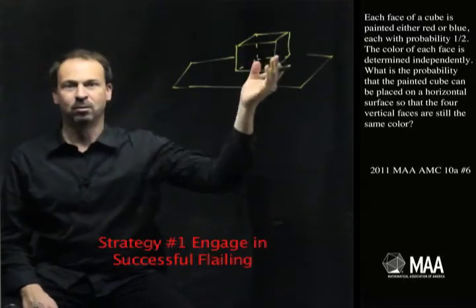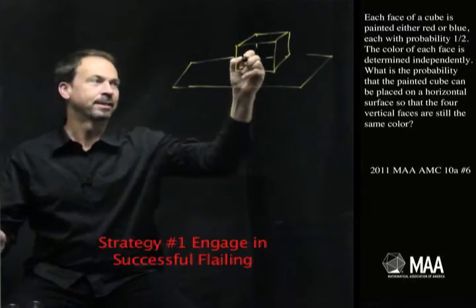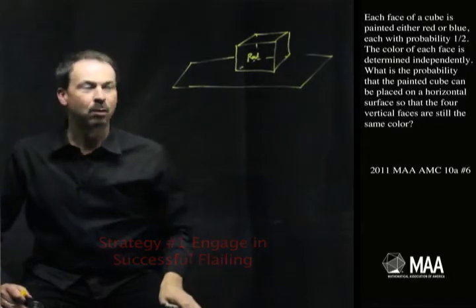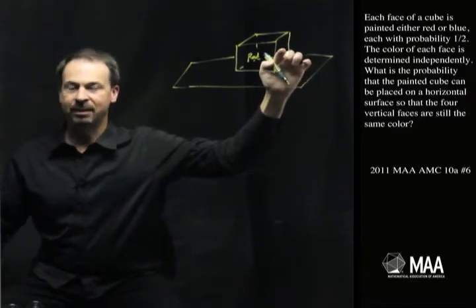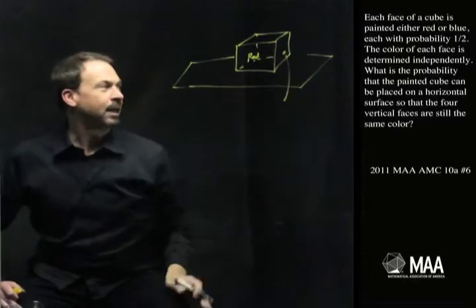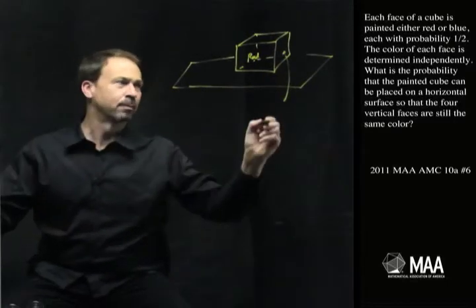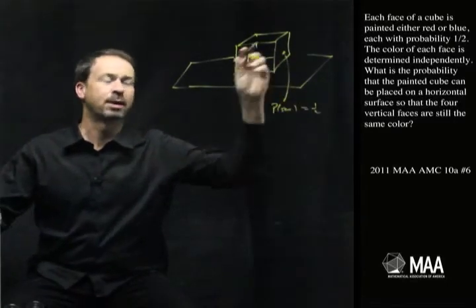The front face can either be red or blue, it's going to be some color. Let's just say it's red. Now what's the probability that the side face is also going to be the same color? Well, each has a half chance of being chosen, so the probability that this is the same color is going to be one half.